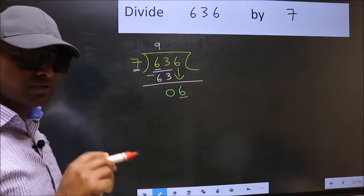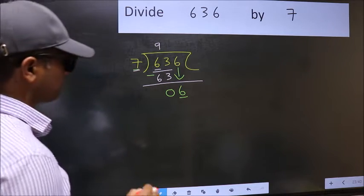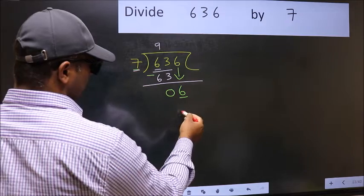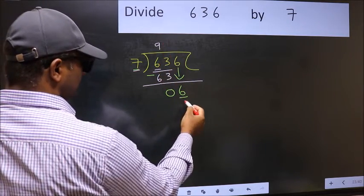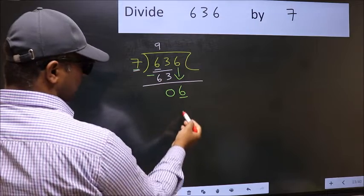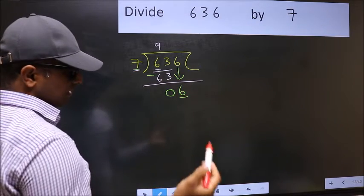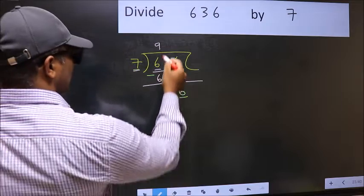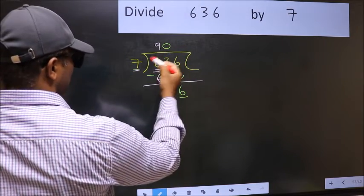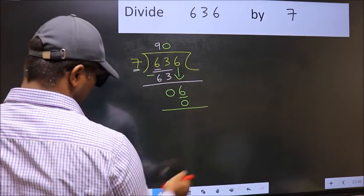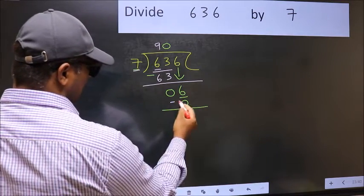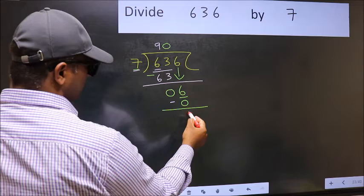Instead what you should think of doing is, what number should we write here? If I take 1 I will get 7. But 7 is larger than 6. So what we should do is we should take 0. So 7 into 0, 0. Now you should subtract. 6 minus 0, 6.